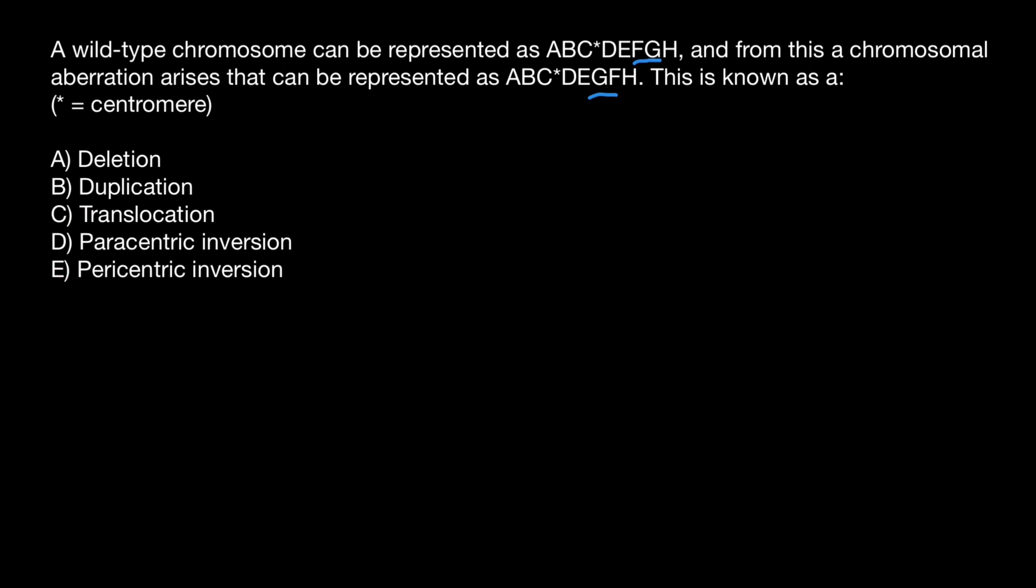But now three of these answers, which is going to be translocation. Looks like it can be the correct answer, but actually not. Translocation would be when we have a chromosome with a centromere and another chromosome with a centromere. We see here two non-homologous chromosomes. If these two non-homologous chromosomes would change its arms, for example,